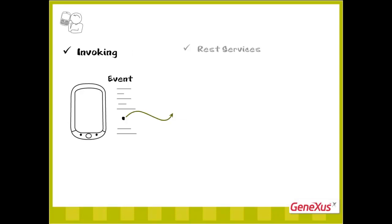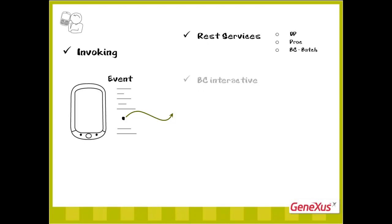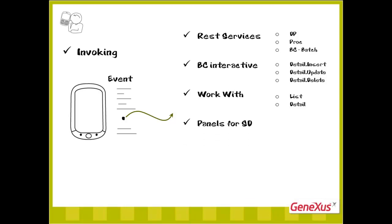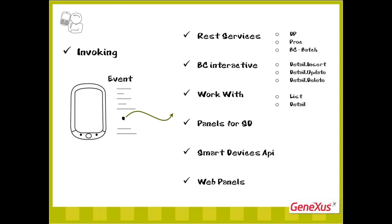So far we've seen all possible invocations: to REST services, data providers, procedures, and business components; to detail screens of the WorkWith in edit mode for inserting, updating, or deleting interactively; to the WorkWith screens to view information, both list and detail in view mode; to panels for smart devices; to any of the APIs for smart devices provided by GeneXus through its methods; and to web panels. This last case applies only with server objects not invoked as a REST service, because in this case a browser is executed in a transparent manner.